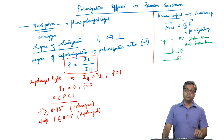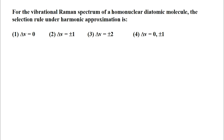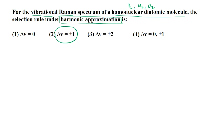We will end this lecture by solving a few problems. The first problem is a multiple choice question: for a vibrational Raman spectrum of a homonuclear diatomic molecule — such as hydrogen, nitrogen, or oxygen — the selection rule under the harmonic approximation is delta V equals plus or minus 1. The other three options are not correct; the correct option is delta V equals plus or minus 1.